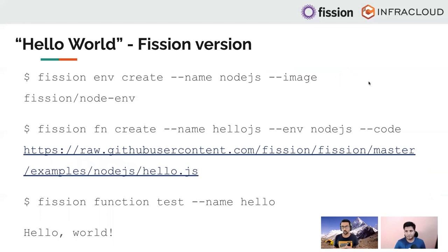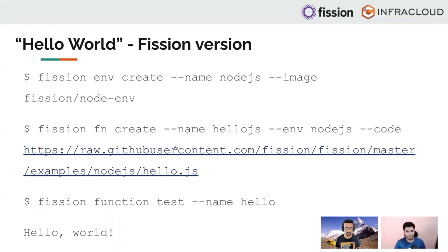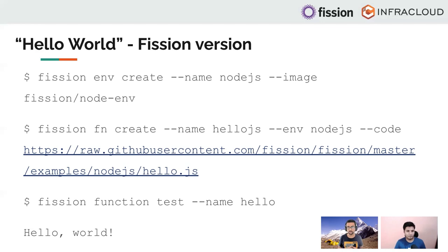If you look at a very simple hello world version of Fission: in the first line, we are creating a Node.js runtime environment using the Fission-provided image as the base image. In the second line, we are creating a function called Hello.js, using the Node.js runtime declared in the first line, and simply pointing to the code on a GitHub repository. That code does a simple hello world. Once these two creations are done, we can call it using `fission function test --name hello` and we get a hello world - without having to understand details of Kubernetes or Docker.